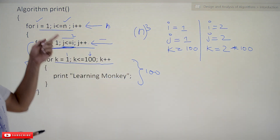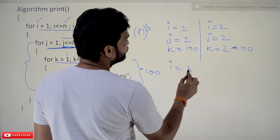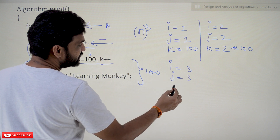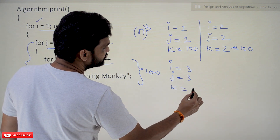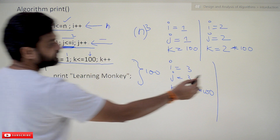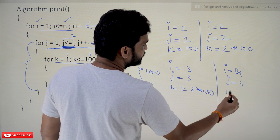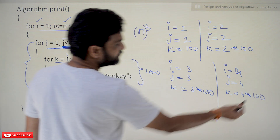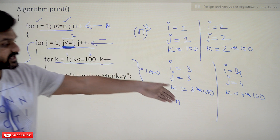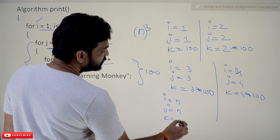When i = 3: the j-loop iterates 3 times and k runs 3 × 100 = 300 times. When i = 4: j iterates 4 times and k runs 4 × 100 = 400 times. And so on. When i = n (the nth iteration): the j-loop iterates n times and k runs n × 100 times.